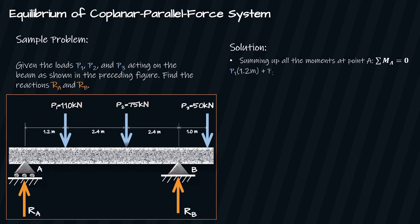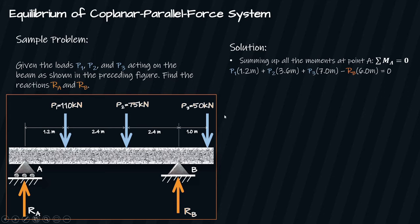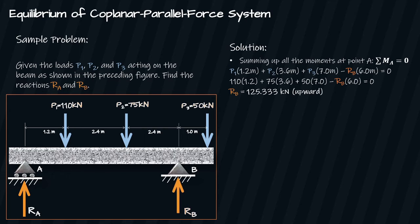Assuming clockwise direction of moment is positive: P1 times 1.2 plus P2 times 3.6 plus P3 times 7 minus RB times 6 equals zero. These measurements are the perpendicular distances from the force to the moment's center point. Substituting the values of P1, P2, and P3, we can get the value of RB, which equals 125.333 kilonewtons, acting in the upward direction.